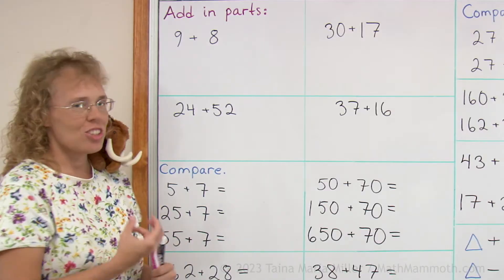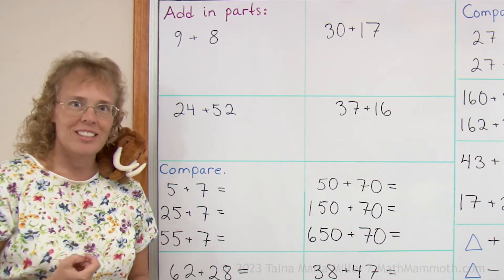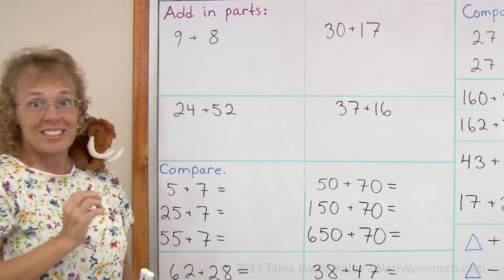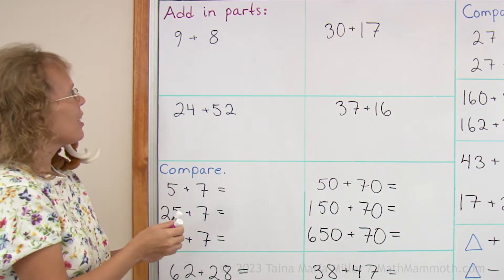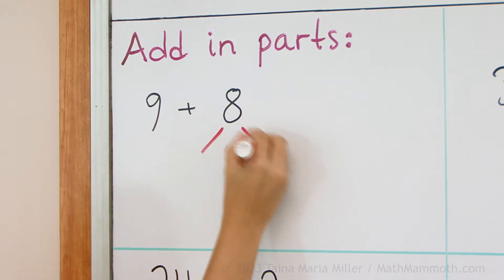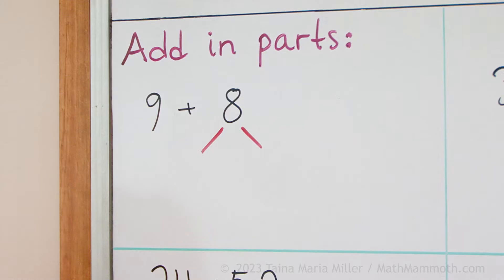My first strategy or technique is adding in parts. You surely know how much is 9 plus 8. It is 17. But we're going to look at it this way: if we add in parts, we will break this 8 into two parts. It's going to become 1 and 7.